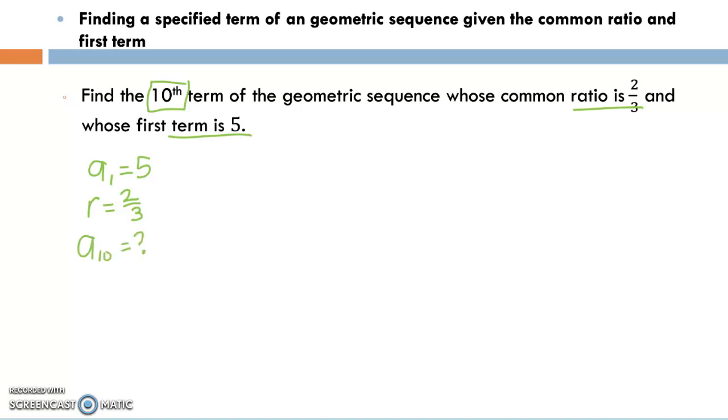If we're wanting to know the tenth term that means n is going to equal 10. I made a video about finding a specified term given the first terms of the sequence and we talk about where this comes from, but we have this formula: aₙ equals my first term times the common ratio raised to the n minus one power.